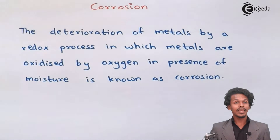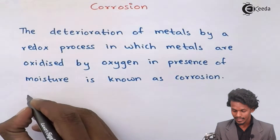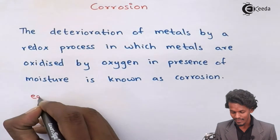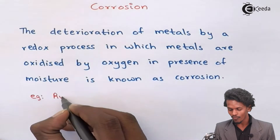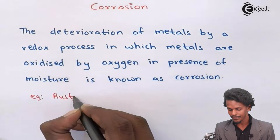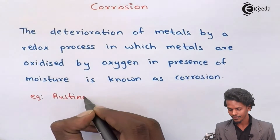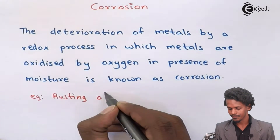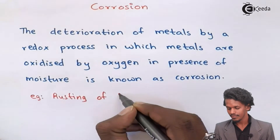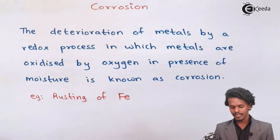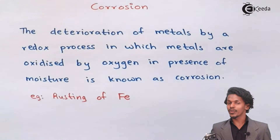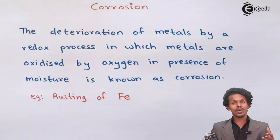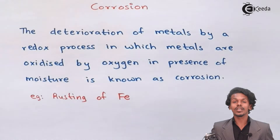A very common example that we know is the rusting of iron. Rusting of iron is the most common example of corrosion.